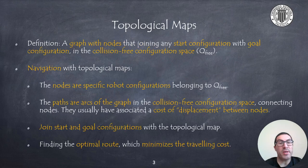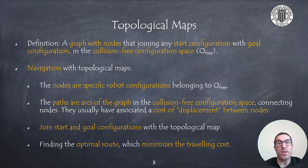I will begin by explaining what a topological map is. It is a graph with nodes joining a start configuration with a goal configuration, defined in the collision-free configuration space, also known as Q-free. In order to navigate on a topological map, the robot must calculate an optimal route that allows it to reach its goal configuration.